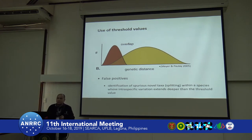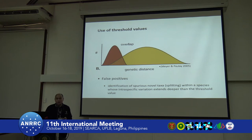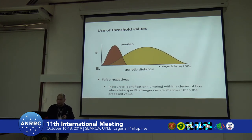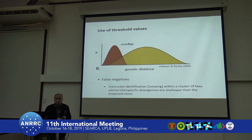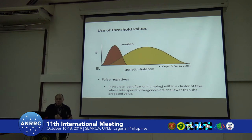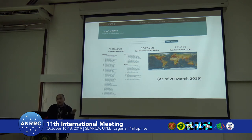When this happens, you may suffer from false positives, where you identify spurious novel taxa and split them into different species when intraspecific variation extends beyond the threshold value. Or you can suffer from false negatives, where you lump two distinct species together as one. We have to constantly evaluate our taxa. When we identify species we base it on morphology, and on the other hand we have DNA-based taxonomy. One way to address this issue is to come up with a mechanism to reconcile the differences between classical taxonomy and DNA taxonomy.